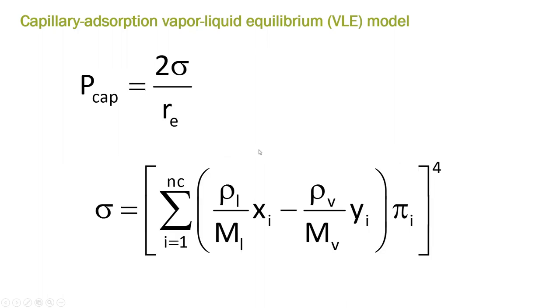So how is this capillary pressure calculated? In this type of modeling, they use pretty simple Young-Laplace equation, which says 2 sigma over re. You see there is no cosine of delta. That means the wettability angle is zero.